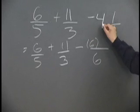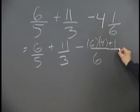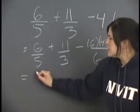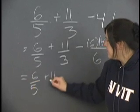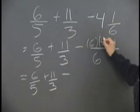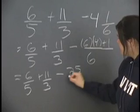And that'll give us 6 fifths plus 11 thirds minus 6 times 4 is 24 plus 1 is 25 sixths.